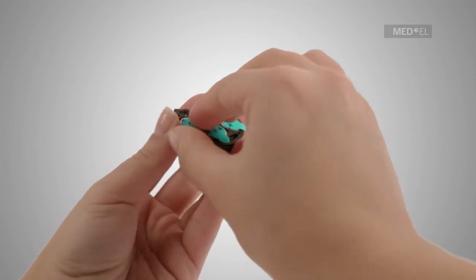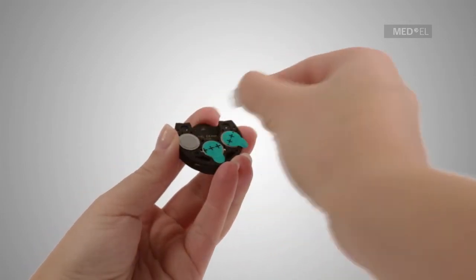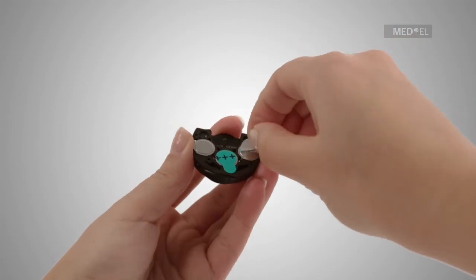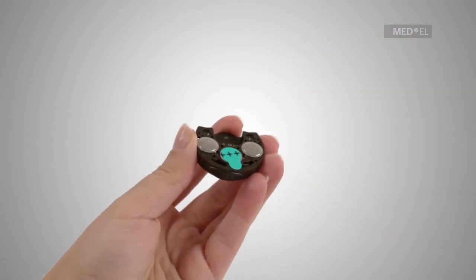The foil covering the zinc air batteries must be removed before use. Ensure that the plus pole is facing outward.